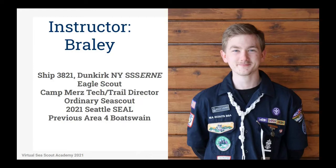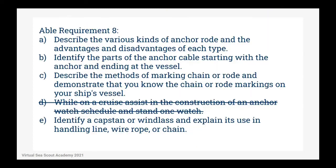I'm an Eagle Scout, local camp staff, currently an ordinary Sea Scout, 2021 SEAL graduate, and previous Area 4 boats-in. Today's requirements ask us to describe the various kinds of anchor rode and the advantages and disadvantages of each type, to identify the parts of the anchor cable starting with the anchor and ending at the vessel, to describe the methods of marking chain or rode, and demonstrate that you know the chain or rode markings on your vessel. We'll also help you construct a watch schedule and explain what a watch is. Finally, we'll identify a capstan and a windlass and explain why they're used in handling line, wire rope, and chain.